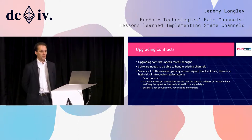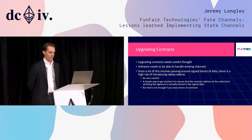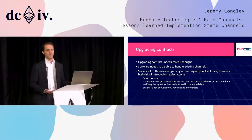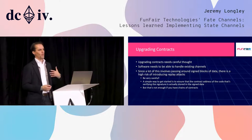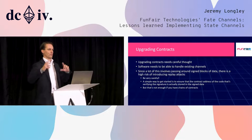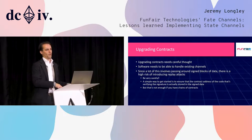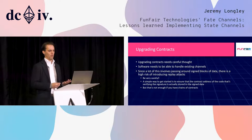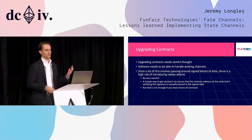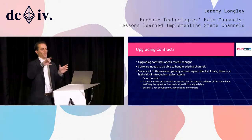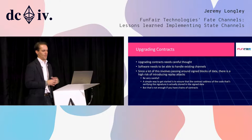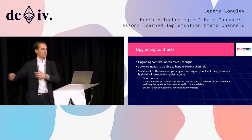Upgrading contracts is obviously hard anyway — you have to build in upgradeability to most things on chain. But you might have a channel that's open, so your client software needs to be able to run both versions of channels at the same time. Most importantly, state channels involve signing stuff off-chain and putting it on-chain, so you don't get the natural replay protection that a regular transaction provides. You have to be very careful about replay attacks — a simple approach is to ensure that the contract address of the code verifying the signature is actually stored in the data itself.